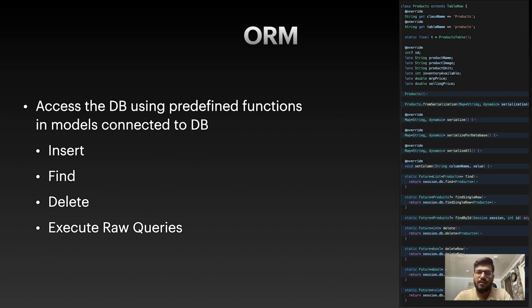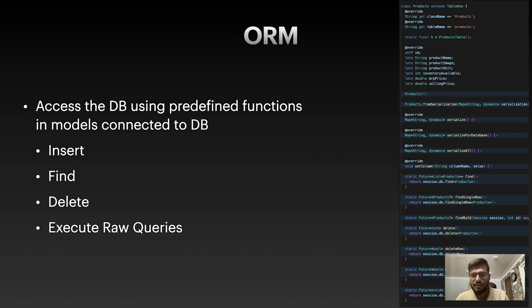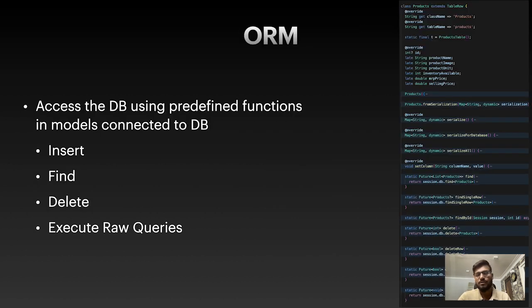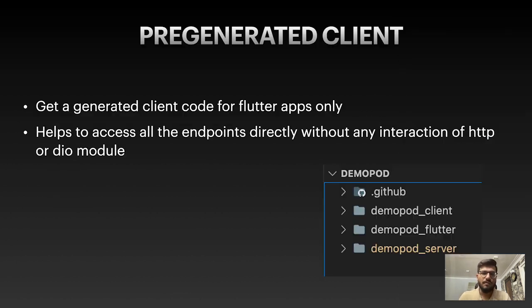Running the `serverpod generate` command creates the model class automatically connected to the database, and also generates the SQL code to create the tables. You can see on the right side that the auto-generated `Product` model includes all functions — serialization, find, delete, update, insert, count, and even raw SQL query execution — all generated from just that small YAML file.